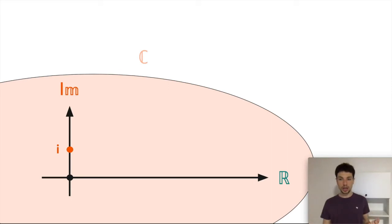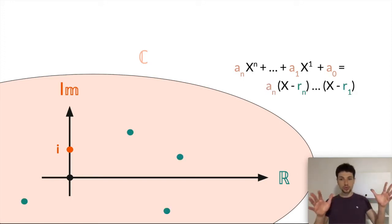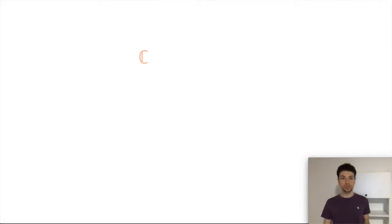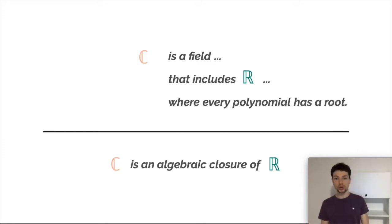What is interesting about the field of complex numbers is that not only our first polynomial x squared plus one has a root, but actually every polynomial with complex coefficients has a root. So if we take an arbitrary polynomial of degree n, we can find all of its n roots in the plane. Every complex polynomial of degree n has n complex roots. To sum up, C is a field, it includes the real numbers, and it satisfies the property that every polynomial has a root. Another way to state all of these properties is to say that C is an algebraic closure of the real numbers.